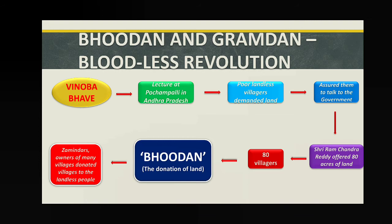Vinoba Bhave talked with these landless villagers and farmers and assured them he would raise the issue with the government and try to solve their problem. Suddenly, one person — Sri Ramchandra Reddy — offered 80 acres of land. He understood the problem and decided to donate 80 acres of land to 80 villagers, meaning one acre per head. This act of donation is called Bhoodan — donation of land.